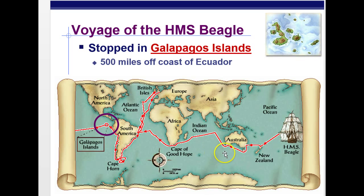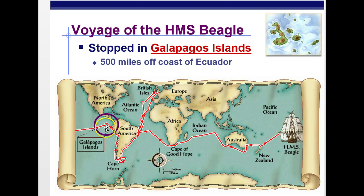Here's a map of his trips. They came down around Europe, down around Africa, and Australia. His most famous stop was right off the coast of South America, about 500–600 miles out, where you find the Galapagos Islands. That actually wasn't the longest stop of the trip — it was pretty short — but it's the place where we credit him with getting all of his ideas for natural selection.